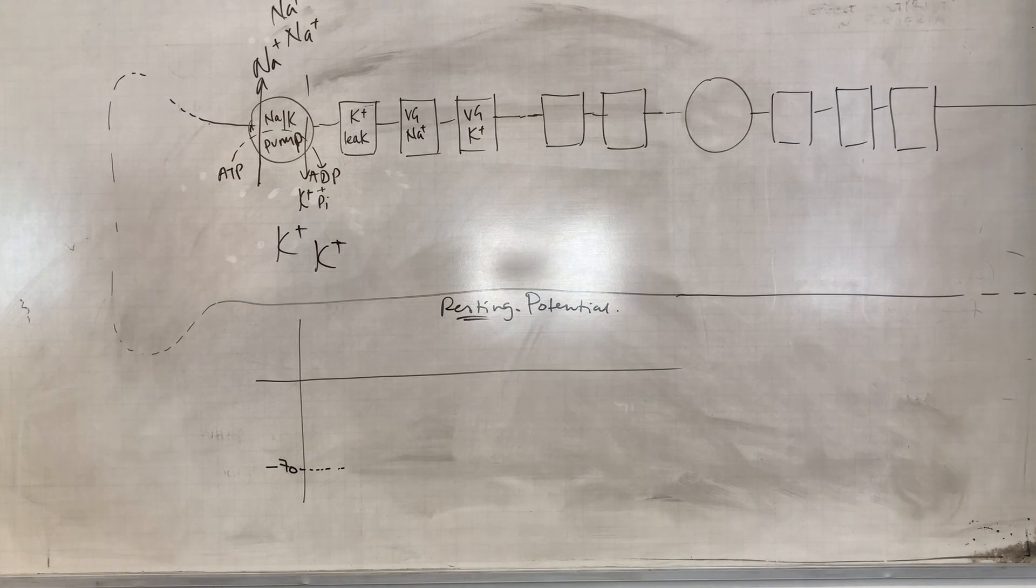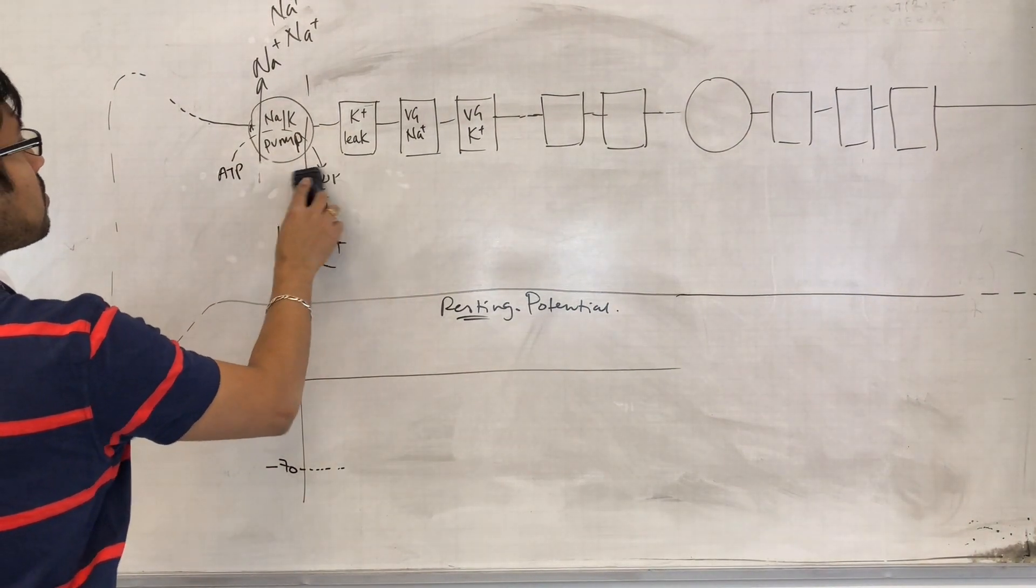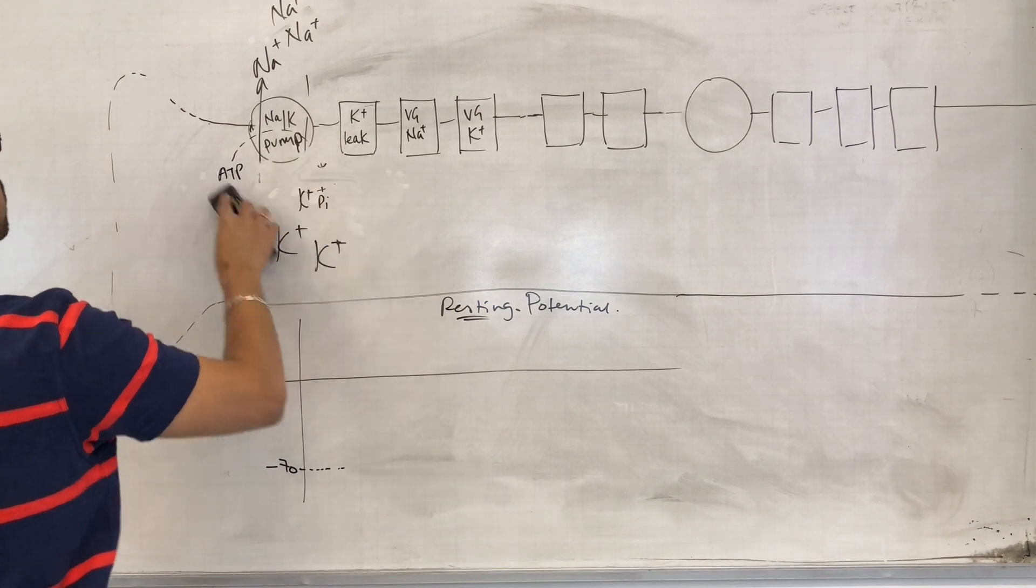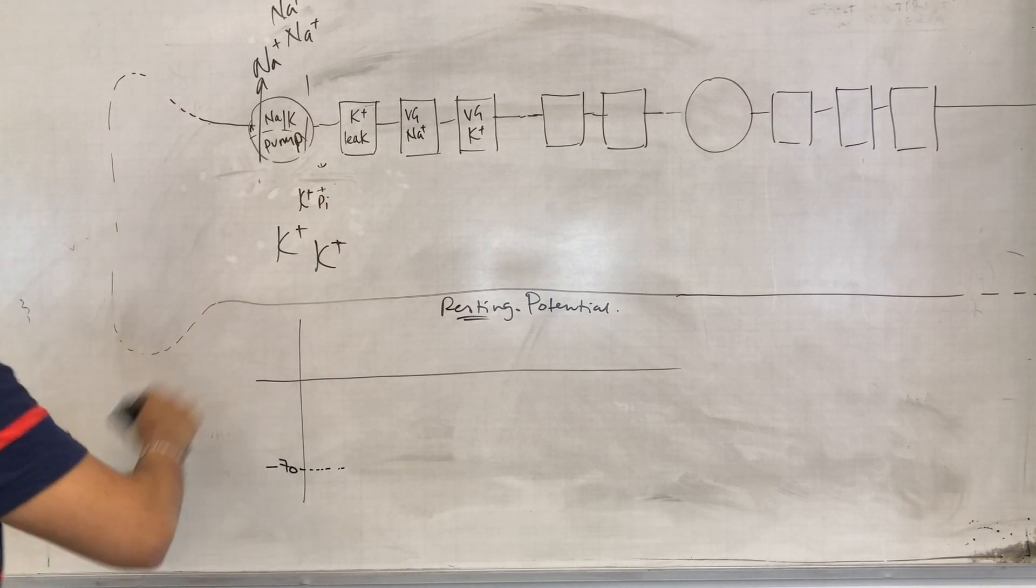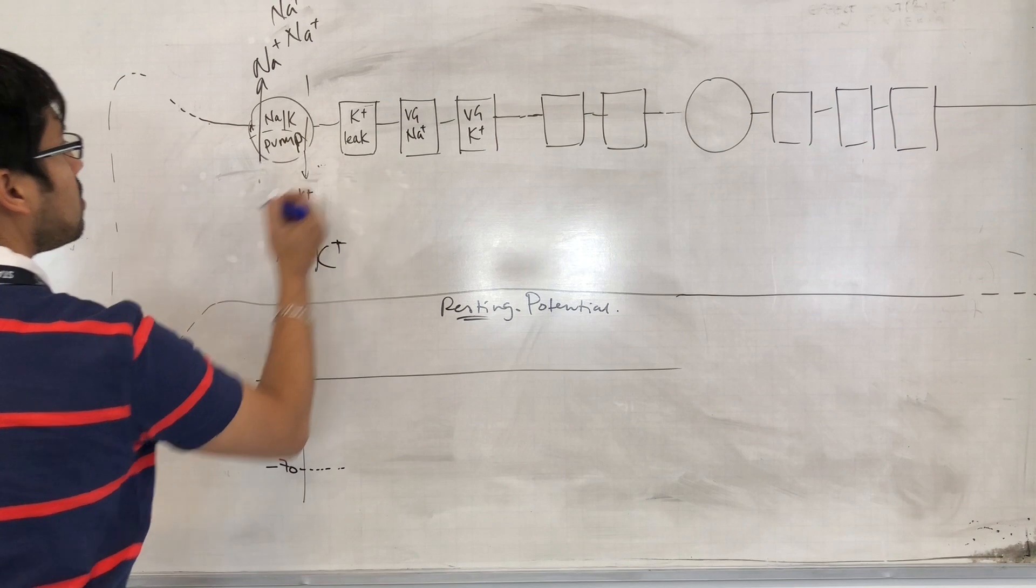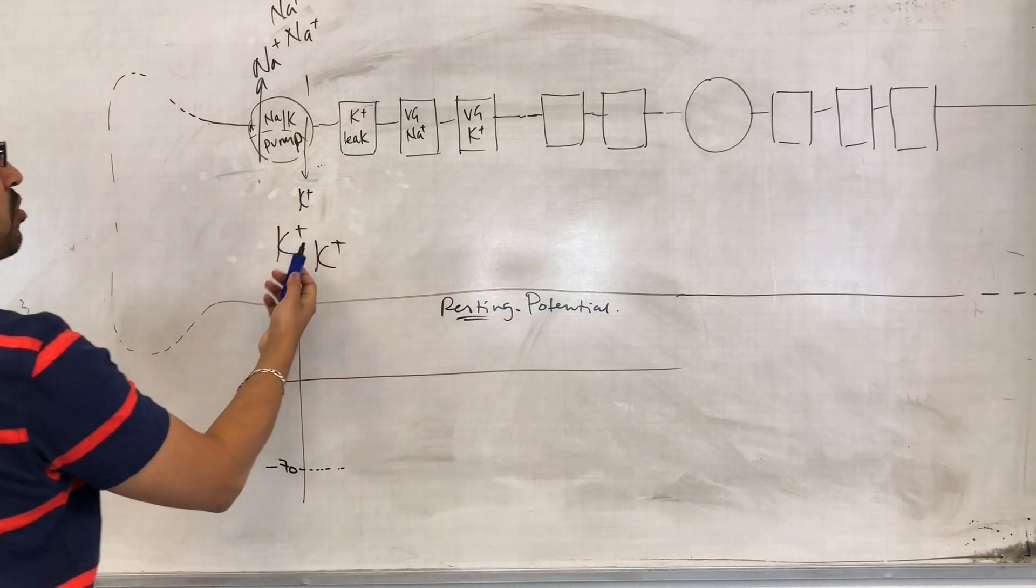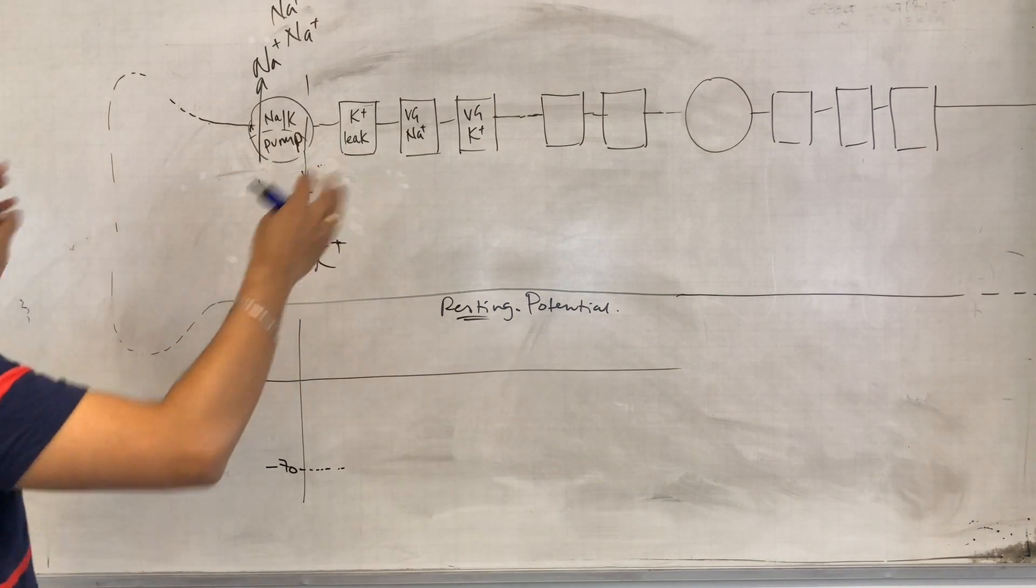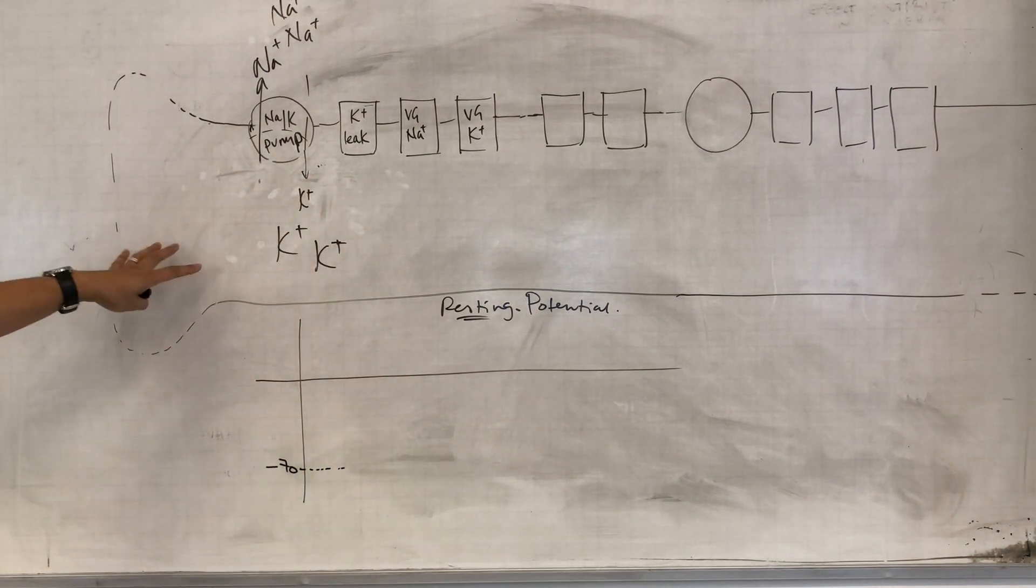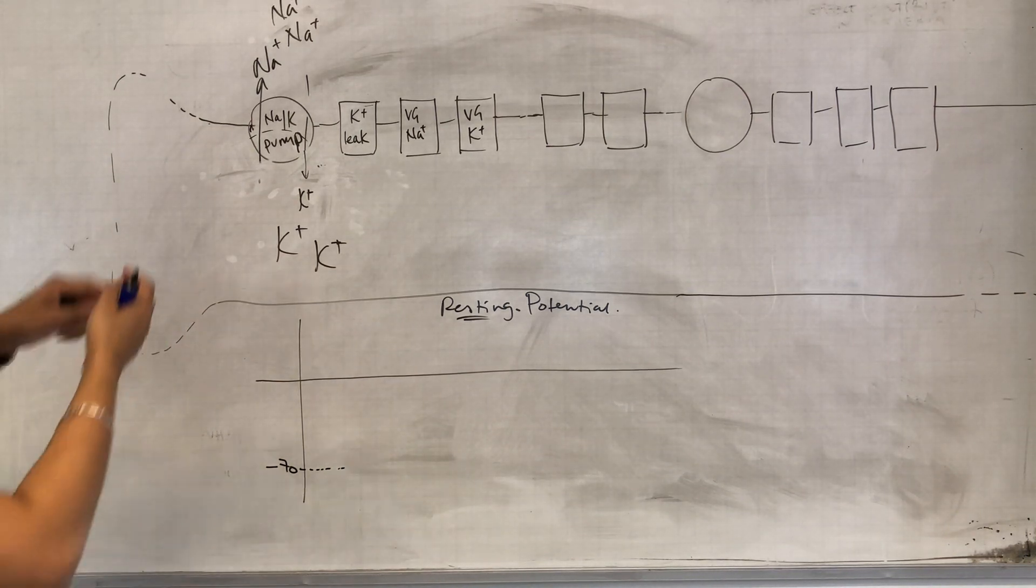So let's get rid of some of this detail, the ATP ADP stuff. Sodium is being moved out or pumped out, potassium is being pumped in, and this is against their concentration gradients because you're going to have a large concentration of potassium already inside the cell and a large concentration of sodium outside of the cell.